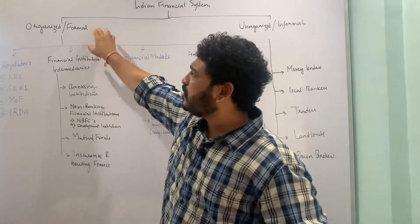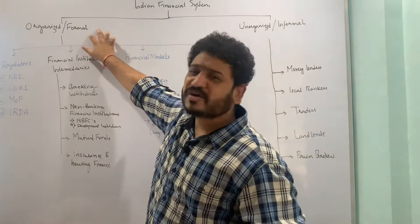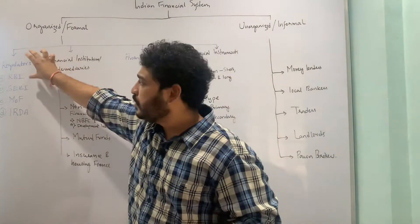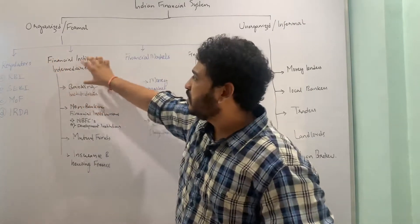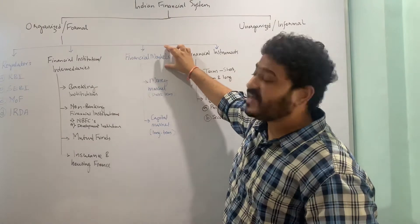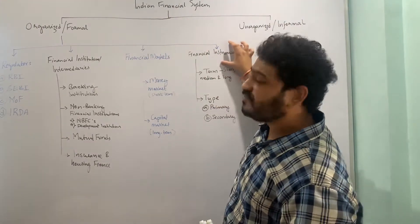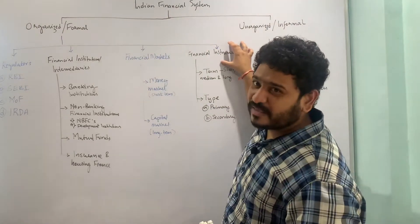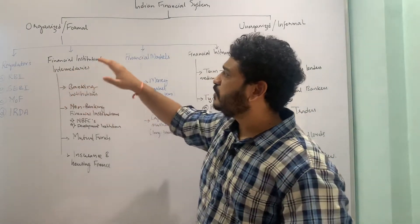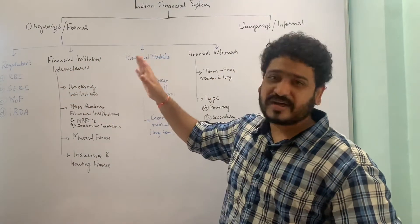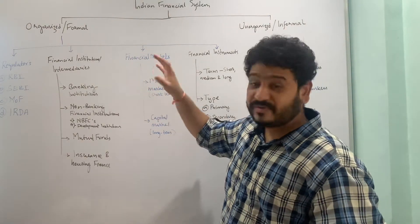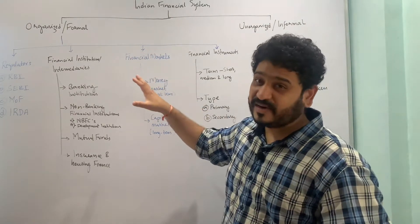When I talk about organized or formal institutions in the Indian financial system, we have certain regulators, then certain financial institutions or intermediaries, then financial markets, and then financial instruments. These are the four different distinctions we can see as far as the organized financial system is concerned, and we are looking at the Indian financial system per se.